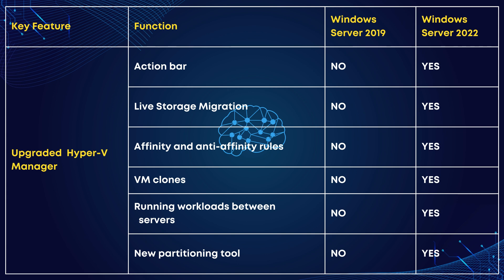In the realm of virtualization, the upgraded Hyper-V Manager features an improved Action Bar designed for more efficient virtual machine management, providing a streamlined interface for common tasks. Live Storage Migration allows relocation of a virtual machine's storage while it's still running, ensuring continuous operation with minimal downtime. Affinity Rules permit specifying which VMs should run on the same host, while Anti-Affinity Rules ensure specific VMs are kept on separate hosts for increased availability and resilience.